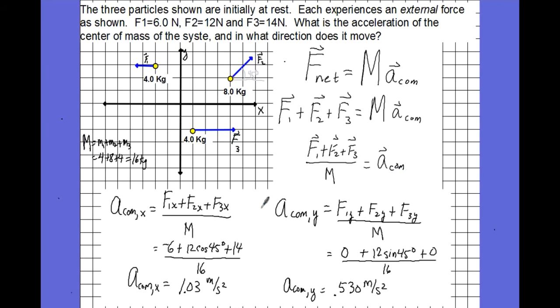So I work separately in the X and the Y. In the X direction, the acceleration of the center of mass is the sum of the forces in the X direction divided by the total mass. Given this information and the fact that this is 45 degrees, the force on particle one is six newtons in the negative direction. On particle two is 12 cosine 45 degrees in the positive direction for the X component of F2. And F3 is 14 newtons. So I add all that up and divide by 16, and I see that my center of mass in the X direction is accelerating at 1.03 meters per second squared.